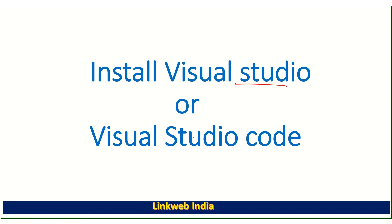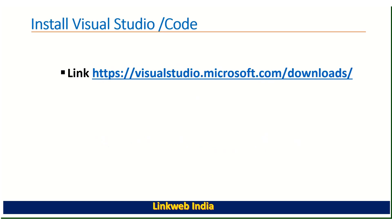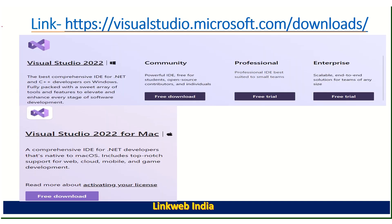So let's start. Here I have given the URL — you just copy and paste the URL in your browser and download the exe. When you open the URL, you get this page for Windows, for Mac, or for Linux — there are three operating systems.